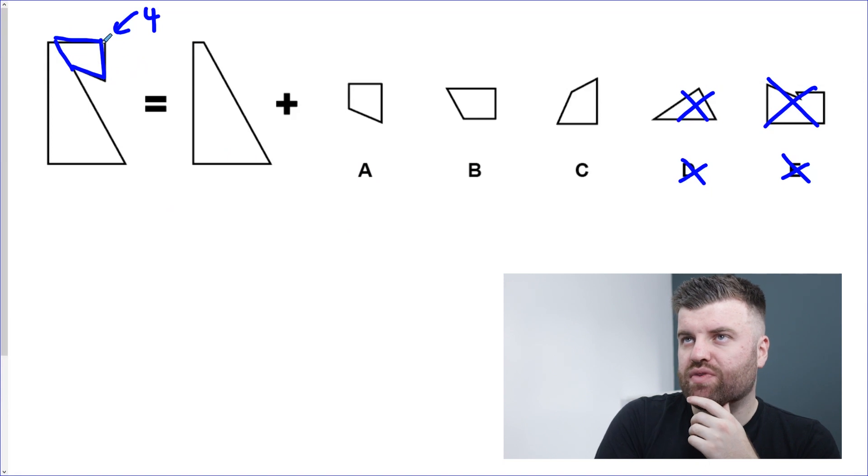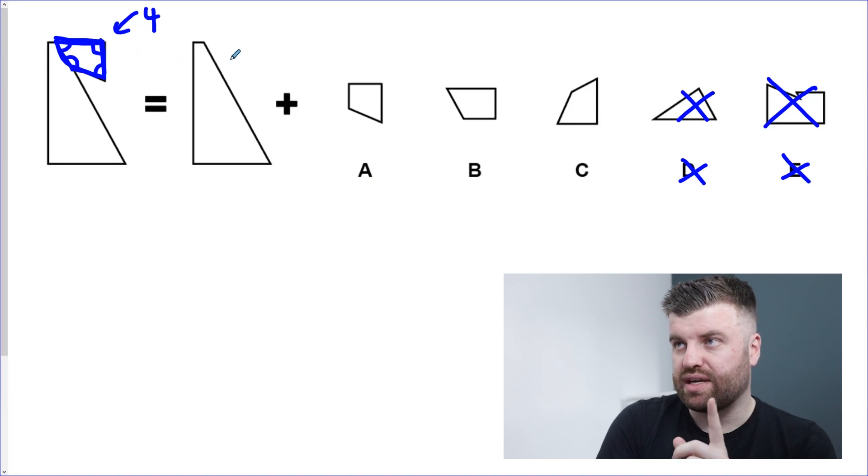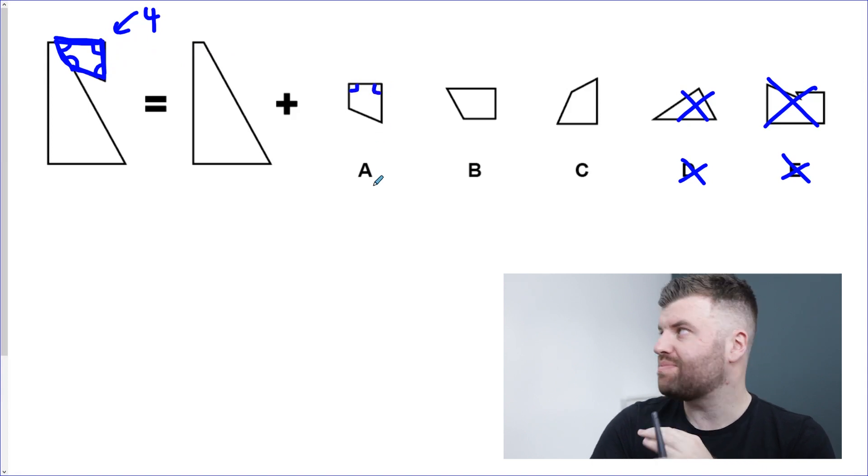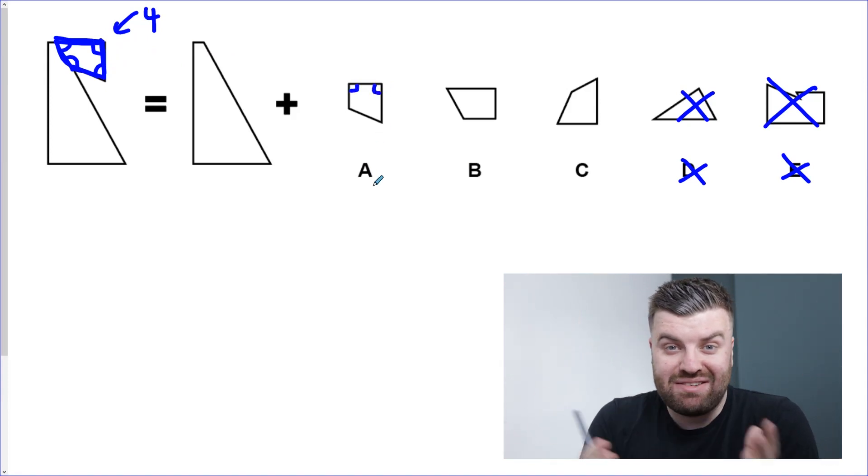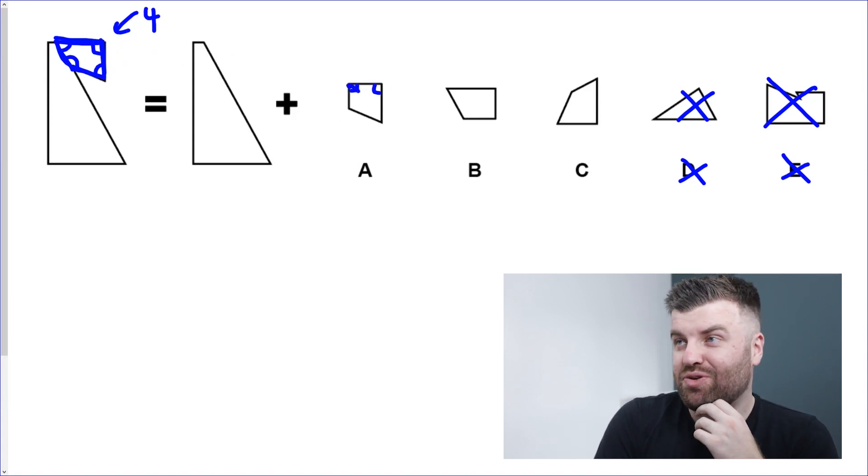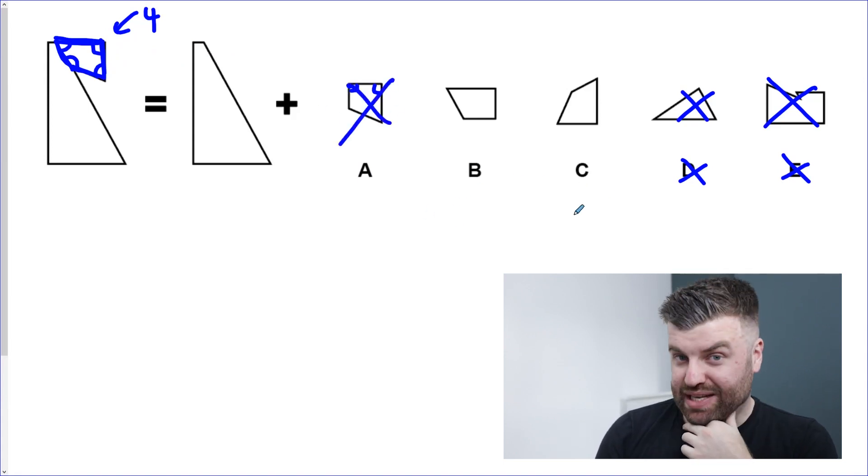So how are we going to manage to separate these out and pick the right answer? Well, we need to look at the angles. The angles are really important. Look at this shape here. How many right angles are in this shape? There are four angles in total. How many of them are right angles? Just one. So we need a shape with one right angle. Can you see here how shape A has two right angles? Doesn't matter how we rotate it, it will never change the number of right angles, so it cannot be A. We're left with B or C.